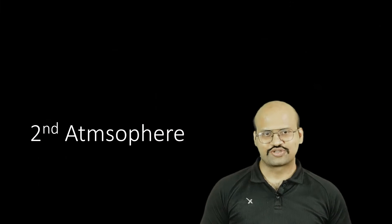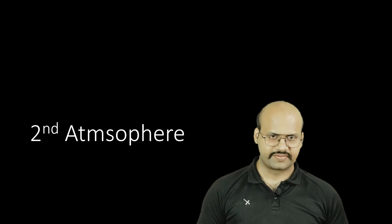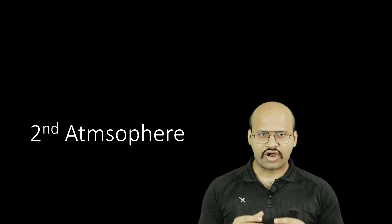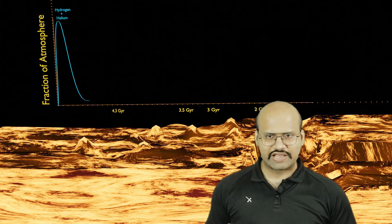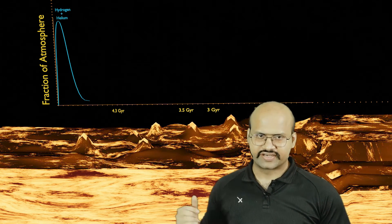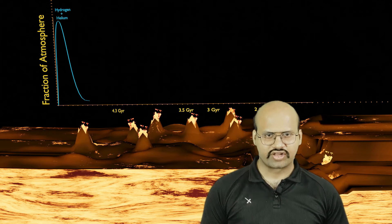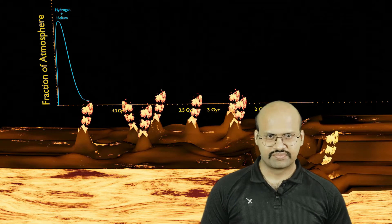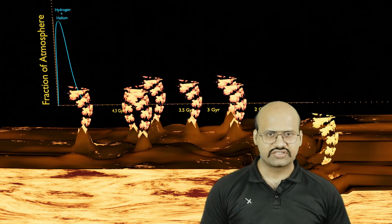This led us to the second stage of atmosphere formation. The Earth, which was a hot ball of molten rocks, cooled down — the surface cooled first while heat remained within it. This heat was released to the atmosphere in the form of volcanoes. A lot of volcanoes were formed on the surface, and a large amount of gases came out of these volcanoes.